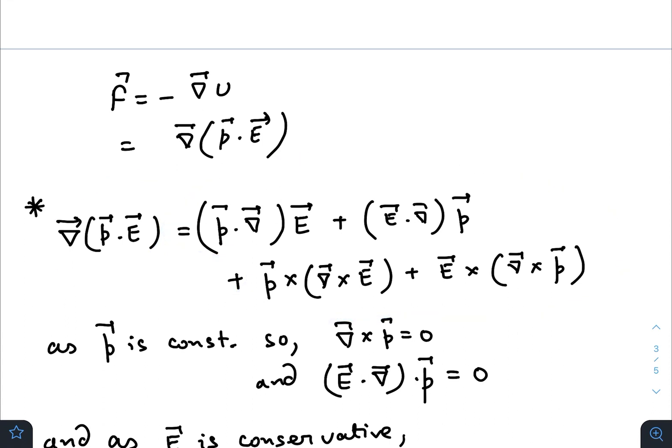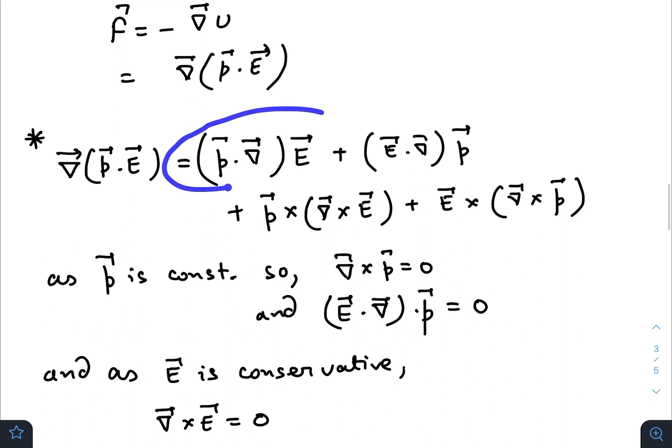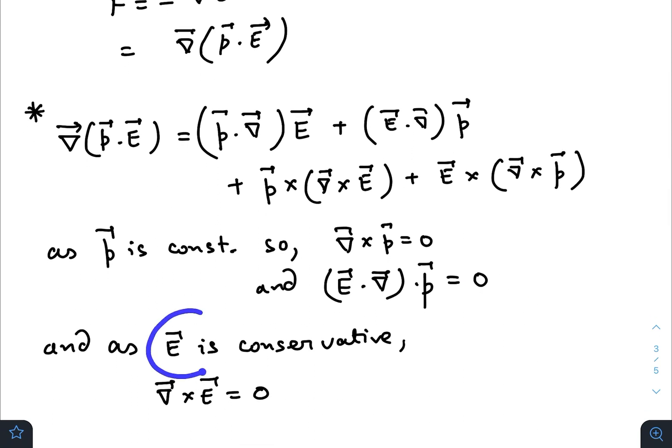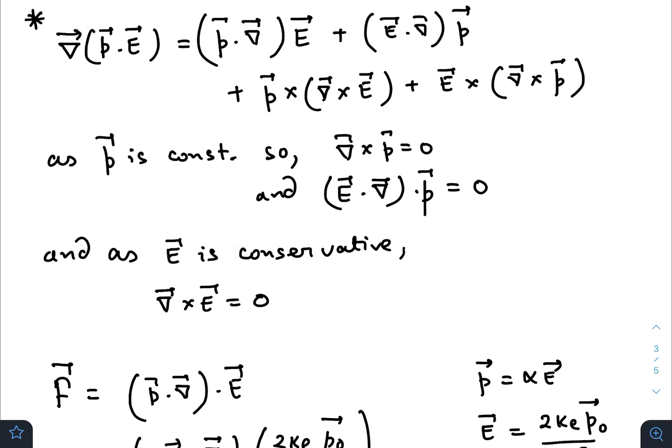P vector is constant, so if you use a differentiation operator on p vector it will give you zero. Again in this case also there is a differentiation operator on p vector, it will also give you zero. Electric field is a conservative vector, so curl of a conservative vector is always zero.